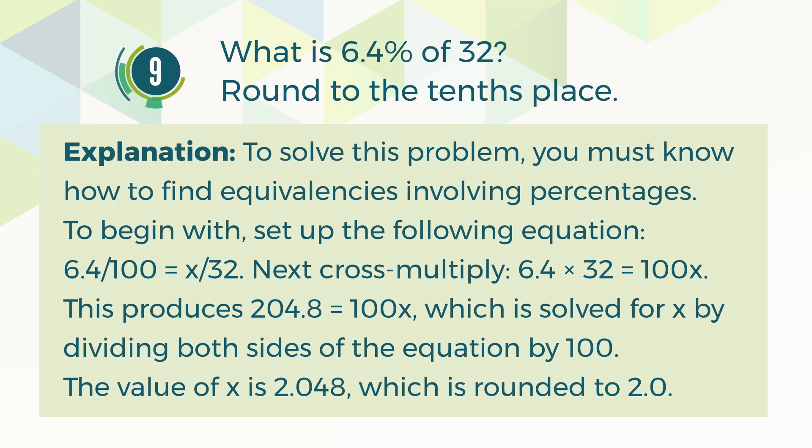Explanation. To solve this problem, you must know how to find equivalences involving percentages. To begin with, set up the following equation: 6.4 divided by 100 is equal to X divided by 32. Next, cross-multiply: 6.4 multiplied by 32 is equal to X multiplied by 100.